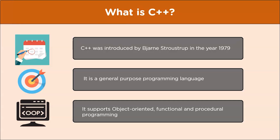C++ was created as an extension of the C language. It is a general-purpose programming language, meaning it is used to build software in a wide variety of applications. It has object-oriented features like classes, inheritance, and abstraction, but C++ also supports functional and procedural programming, which makes it a multi-paradigm programming language.